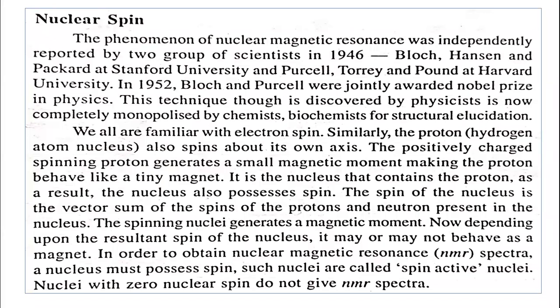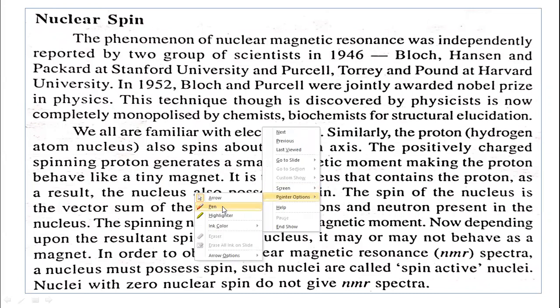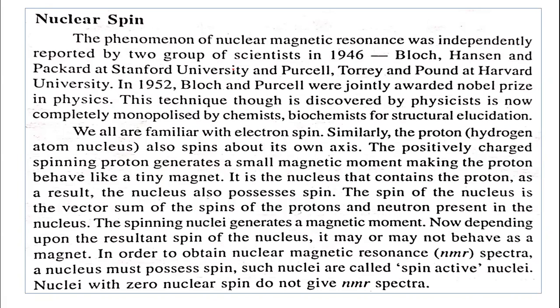Let us see what nuclear spin is. We are familiar with electron spin — we know that the electron revolves around itself. Similarly, the proton also has spin. Just as an electron rotates around itself either clockwise or anti-clockwise, similarly the proton — proton means hydrogen atom — also has nuclear spin and rotates around its own axis. The positively charged spinning proton generates a small magnetic moment.